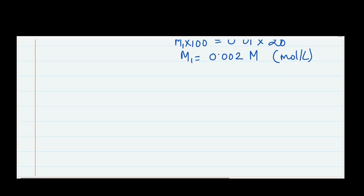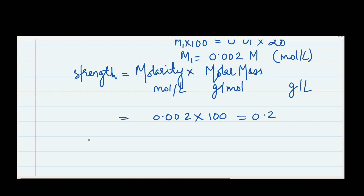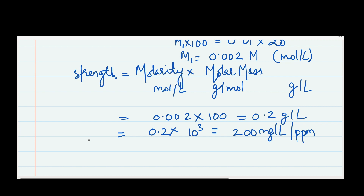To convert molarity to strength, we multiply molarity by the molar mass. Molarity is moles per liter and molar mass is grams per mole, so multiplying gives strength in grams per liter. We multiply 0.002 by the molar mass of CaCO₃ which is 100 — that gives 0.2 grams per liter. Since hardness is expressed in milligrams per liter, we multiply by 1000 to get 200 milligrams per liter, which is also 200 ppm.